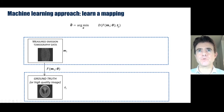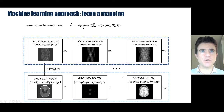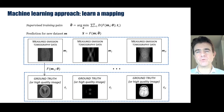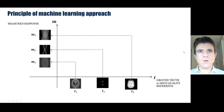We find theta hat such that the mapping f takes measured data as close as possible to the ground truth T. The key is having many training set pairs — lots of measured data with corresponding matched high-quality ground truth references — which is supervised machine learning. We then plug in a new, never-before-seen test dataset and hopefully predict an X that corresponds well to what the ground truth would have been, implicitly accounting for noise or undersampling and for the system matrix if we have enough training data.